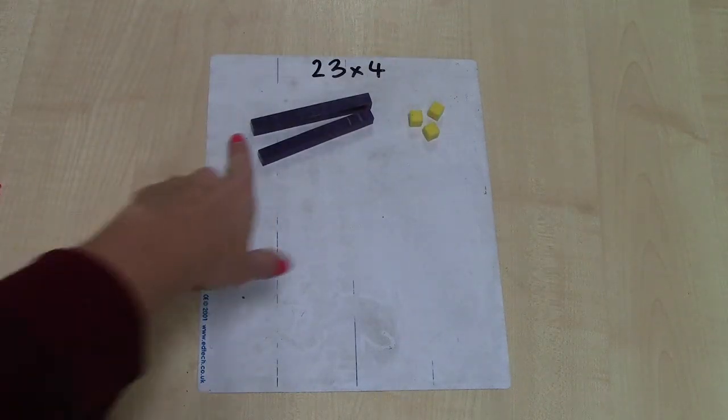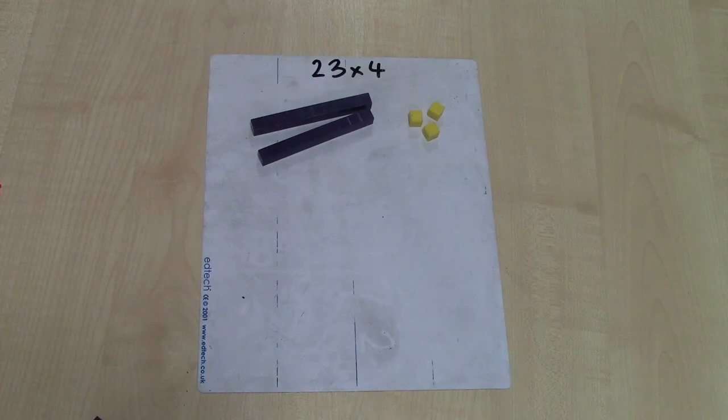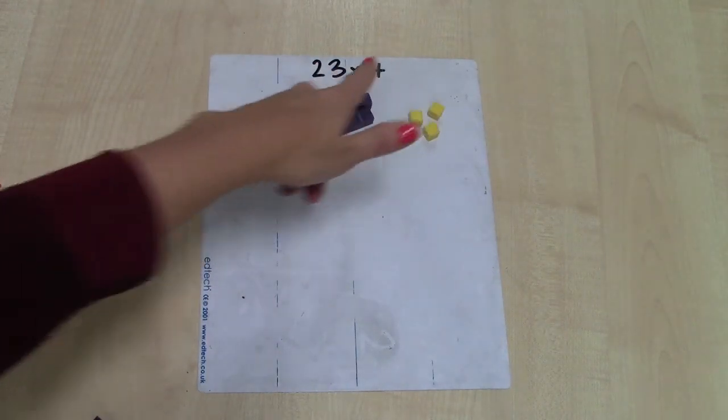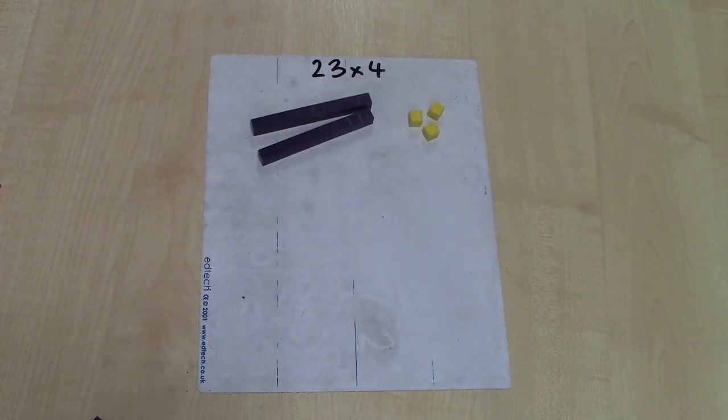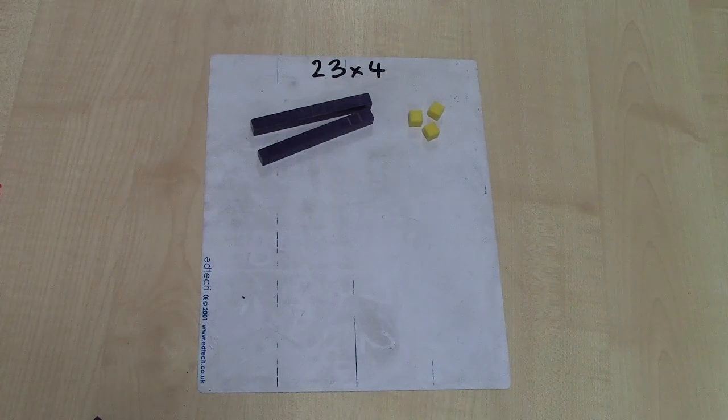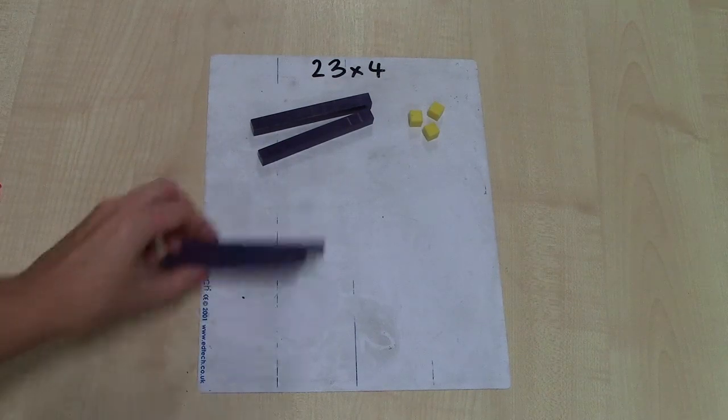So here I've got one group of 23, but I need four lots of 23, four groups of 23. So I'm going to make another group.